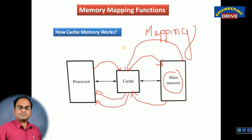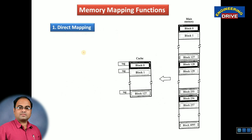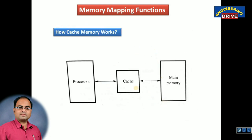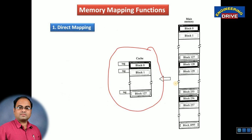Now let us see the different types of memory mapping functions supported by our computer. The first method is direct mapping. This question can be asked in an exam: define memory mapping and explain the different types of memory mapping functions. We need to elaborate on three methods. The first method I am going to explain is the direct mapping method. This is our cache memory — we are elaborating this diagram now.